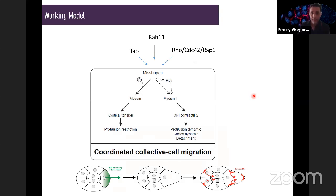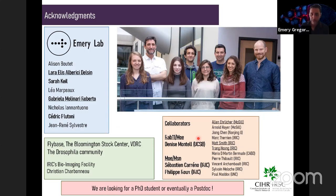To wrap up: I showed you the role of misshapen, and we think we have at least three ways of regulating misshapen activity — one is the kinase Tao that may activate misshapen, one is Rab11 that localizes the overall distribution of misshapen, and another possibility is that it's regulated by GTPases of the Rho and Rap family to recruit misshapen at the cortex. I want to mention that the initial work on Rab11 and moesin was a collaboration with Denis Montel, and the moesin-misshapen work was a collaboration with Sebastian Carminati and Filippo. Thank you for your attention.